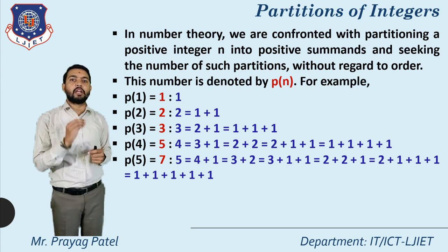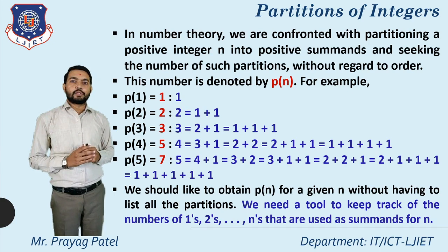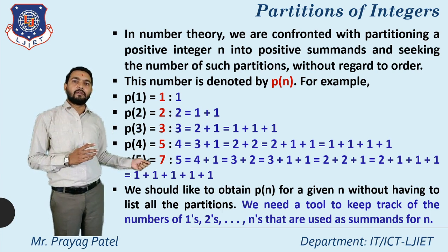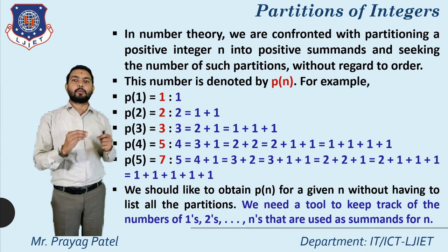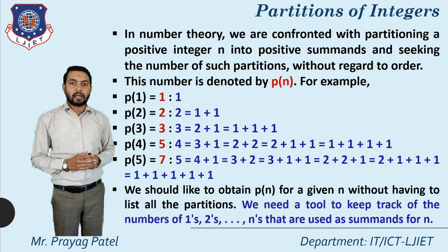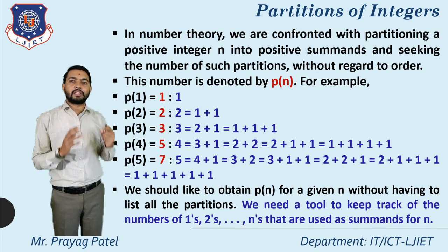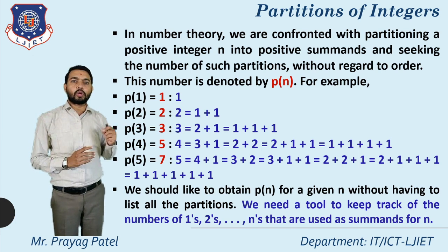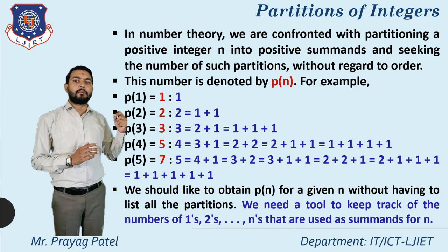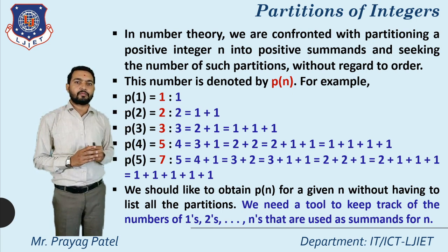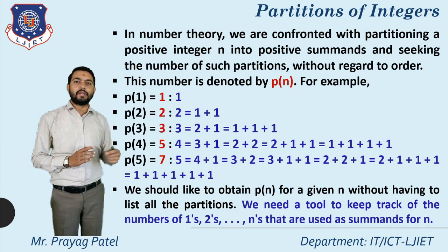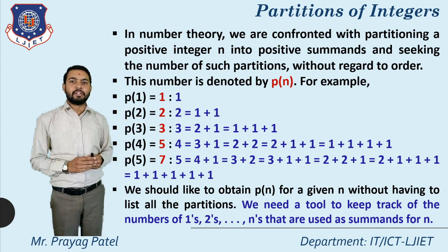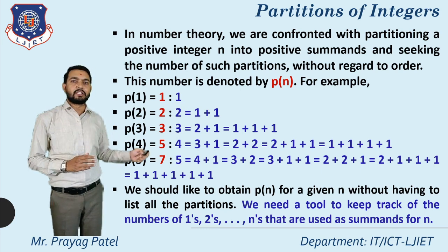We would like to obtain p(n) for a given n without having to list all the partitions. This is a simple way of writing partitions by listing all possible ways, but without listing, how can we directly find the partition? We need a tool to keep track of the number of ones, number of twos, number of n's used as summands for n.